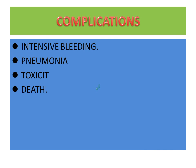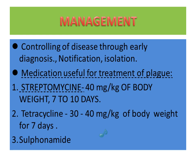Complications include intensive bleeding, pneumonia, toxemia, and death. For management, we need to control the disease through early diagnosis, notification, isolation, and medication. Medications useful for treatment of plague are: streptomycin 40 mg per kg of body weight for 7 to 10 days; tetracycline 30 to 40 mg per kg of body weight for 7 days; and sulfonamide is also used in plague.